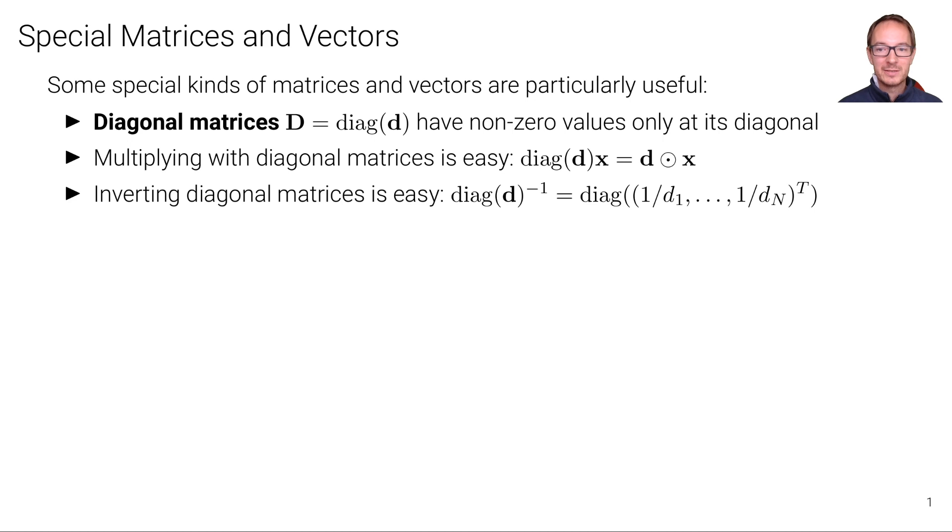What we can do instead is we can simply invert each element of that diagonal matrix individually, and that will give us the diagonal, the inverted diagonal matrix.